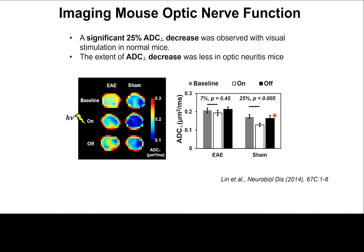In contrast, in EAE mice, the baseline is higher due to demyelination and inflammation. Upon visual stimulation there is a decrease in radial diffusivity, and it does increase back toward but not quite to normal. Overall, we see about a 7% drop that did not reach statistical significance, but it does come back toward baseline. You can see the functional response is affected in these EAE mice.